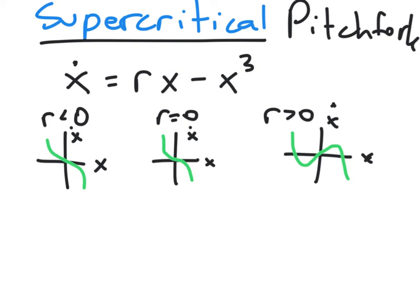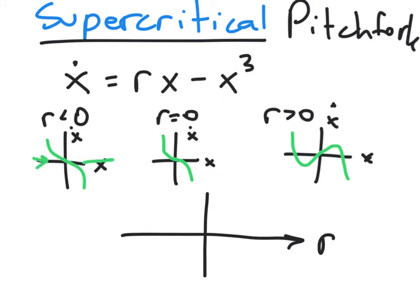For the supercritical pitchfork, to make the bifurcation diagram, we're interested in plotting the fixed points as a function of the parameter r. When r is negative, we have only one fixed point at zero. Let's check its stability by drawing some arrows. When we're below, we're increasing; when we're above, we're decreasing — it's a stable fixed point.